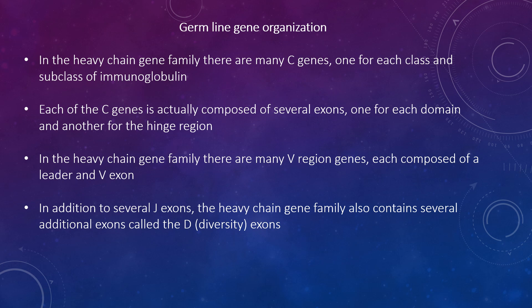In the heavy chain gene family, there are many C-genes, one for each class and subclass of immunoglobulin. Each of the C-genes is actually composed of several exons: one for each domain and another for the hinge region. There are also many V-region genes, each composed of a leader and a V-exon. In addition to several J-exons, the heavy chain gene family also contains several additional exons called the diversity exons, or D-exons.